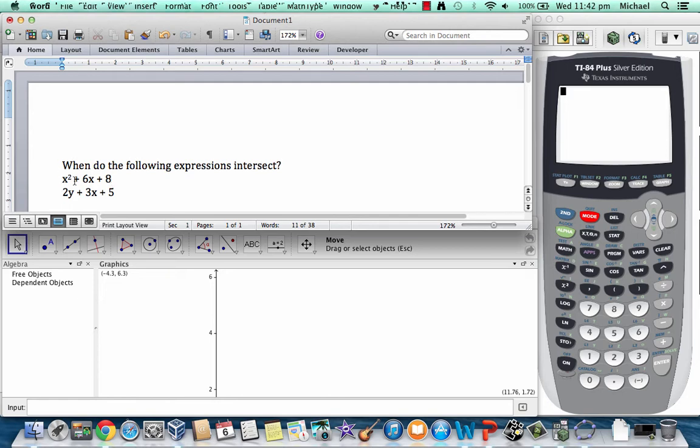So we're given here a quadratic, so we can tell this one's going to give us a parabola because there's a power 2, and the second one here we can see is going to be a linear graph because there's no power to the 2.